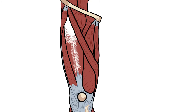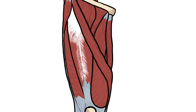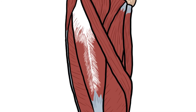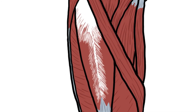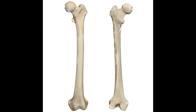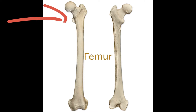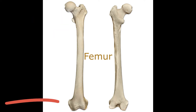Hey guys, it's Layla. Today we'll speak about the thigh. Starting with the bone, you've got just one bone — it's the femur. On top it attaches to the pelvis or the hip bone, and below to the tibia and the fibula.